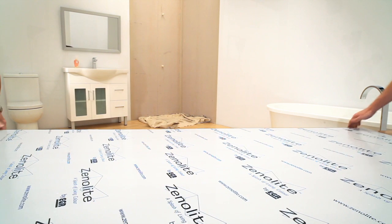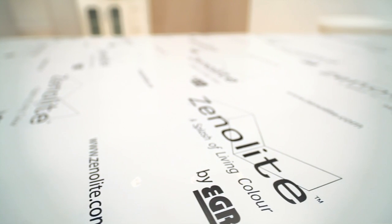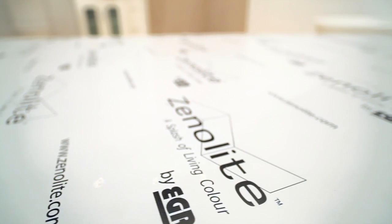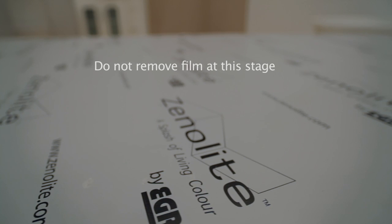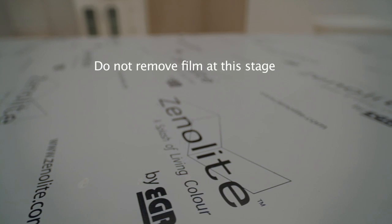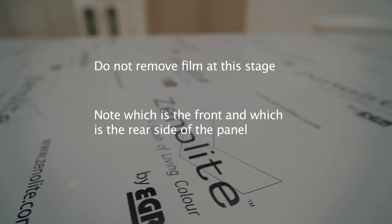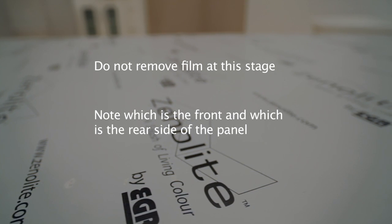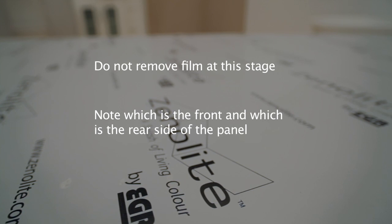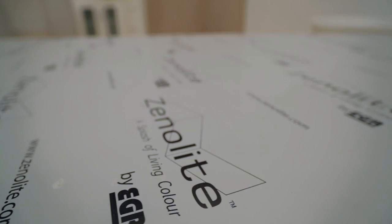The Xenolite Plus sheet is supplied with a protective film on both sides of the sheet. Do not remove the film on either side of the panel at this stage. It's important to understand which is the front of the panel and which is the rear. The clear side is the front of the panel. It has a protective film on it to ensure the high gloss surface remains undamaged until the final installation is completed.